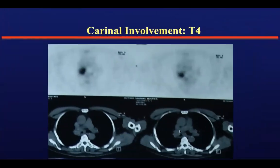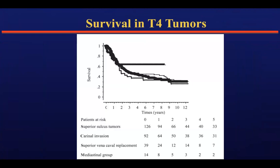This patient had carinal involvement and the tumor involves the carina. We operated this patient with carinal resection. You may ask why we operate some T4 tumors and not others — the answer lies in survival. Some patients, for example those with tumors invading the superior sulcus, carina, superior vena cava, or mediastinum, can have higher than 30% survival when operated.